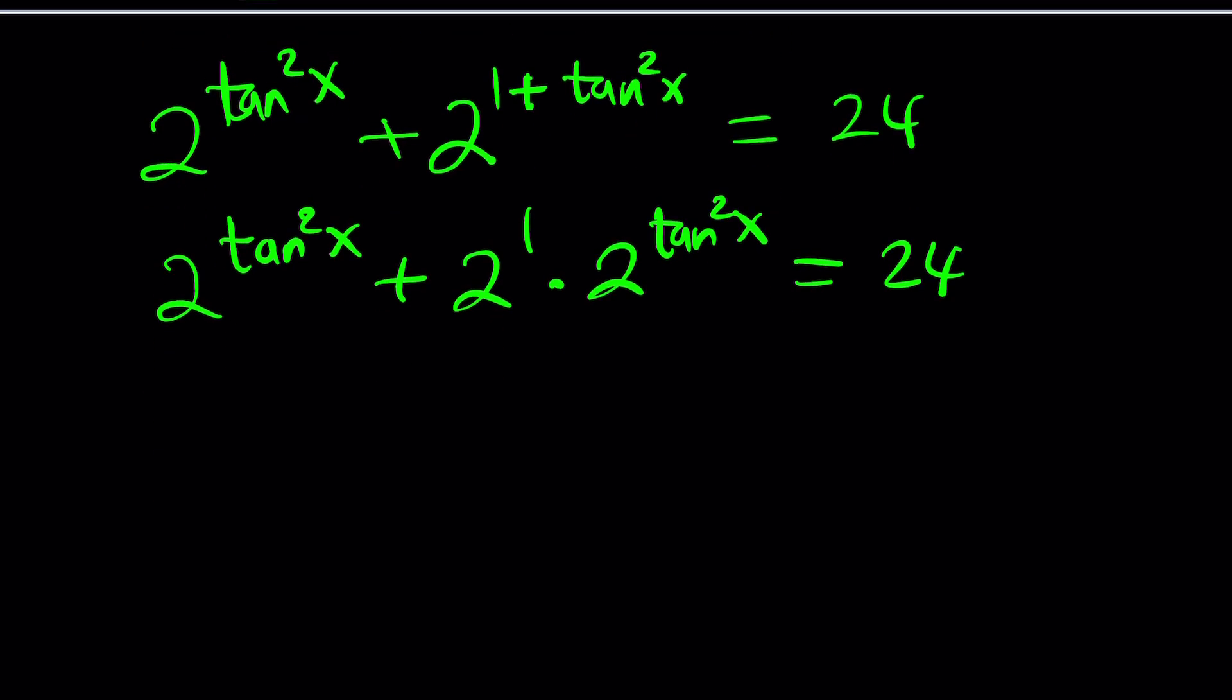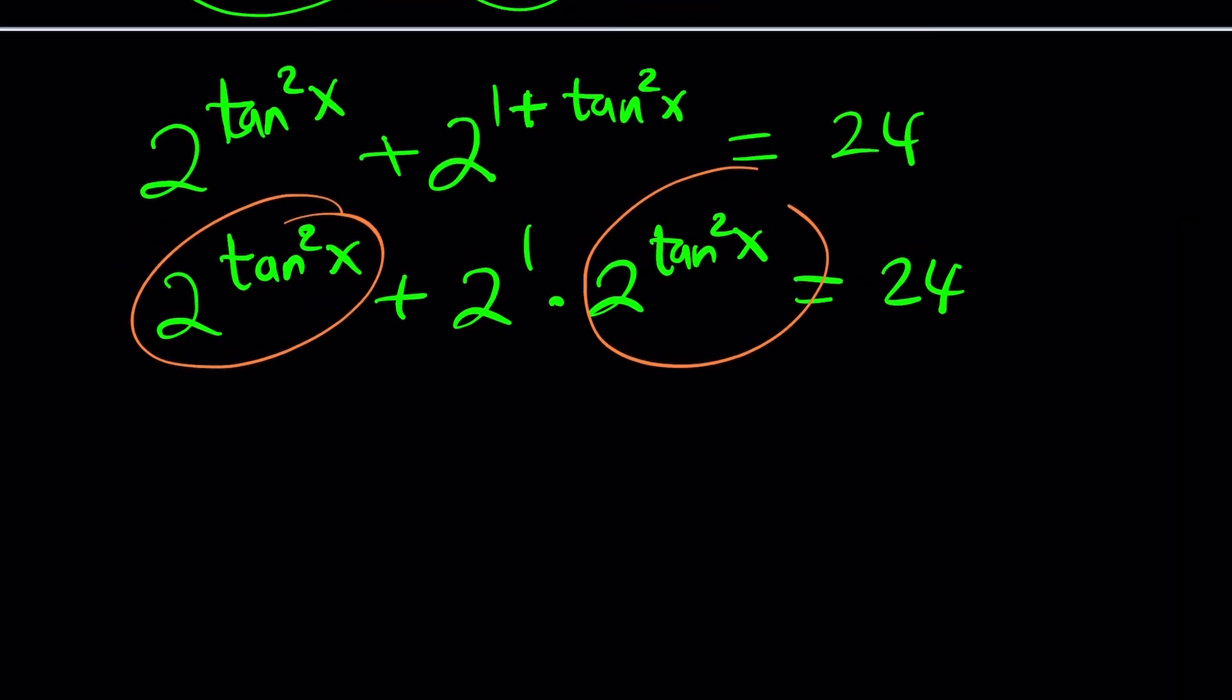We can split it up. 2^(tan²x) + 2^1 × 2^(tan²x). Remember, you can undo that. And now we have something that's showing up. So why don't we call that something, right? Does that make sense at all? We do see 2^(tan²x) more than once, which means we must use substitution. You don't have to, but it's a good idea.